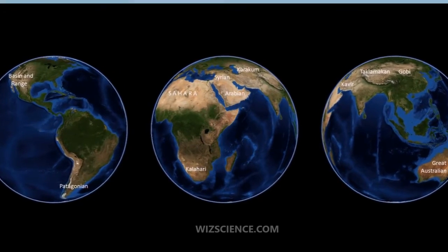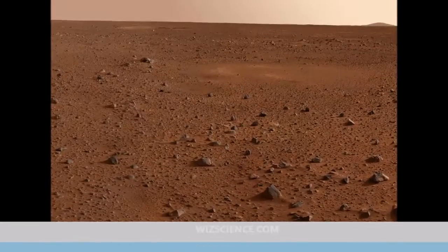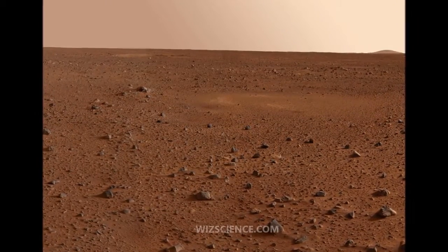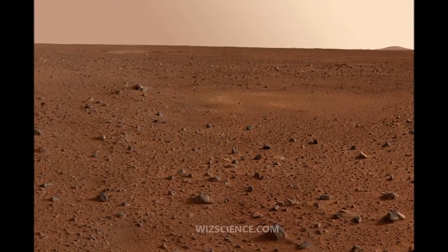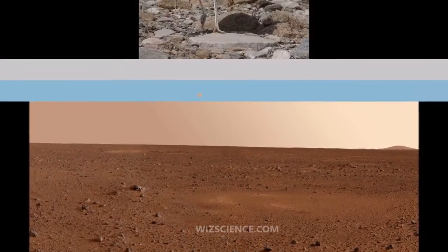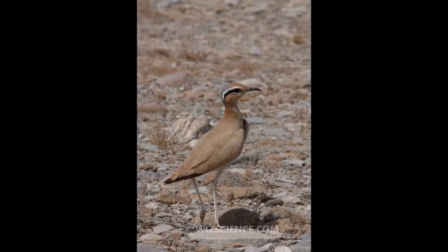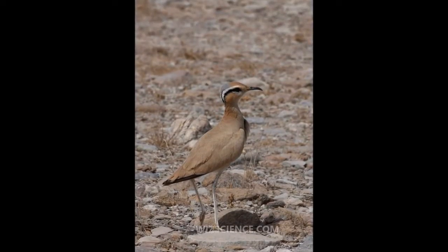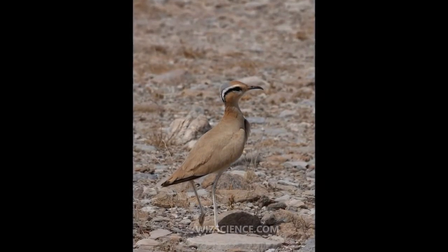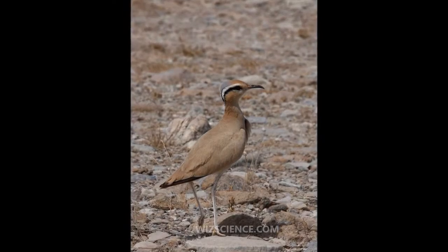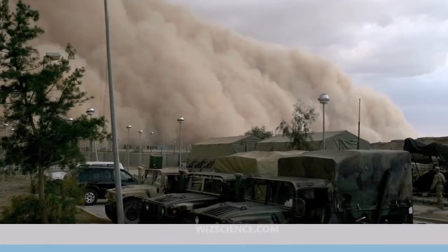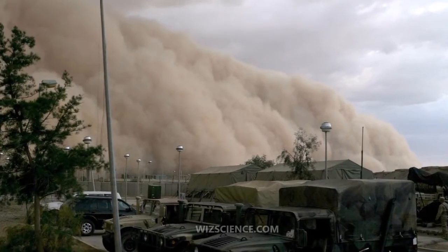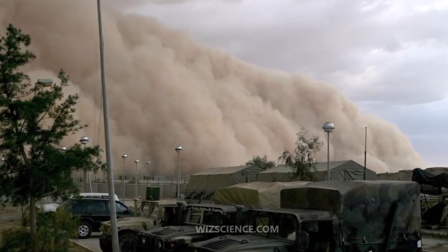Deserts are formed by weathering processes as large variations in temperature between day and night put strains on the rocks, which consequently break in pieces. Although rain seldom occurs in deserts, there are occasional downpours that can result in flash floods.